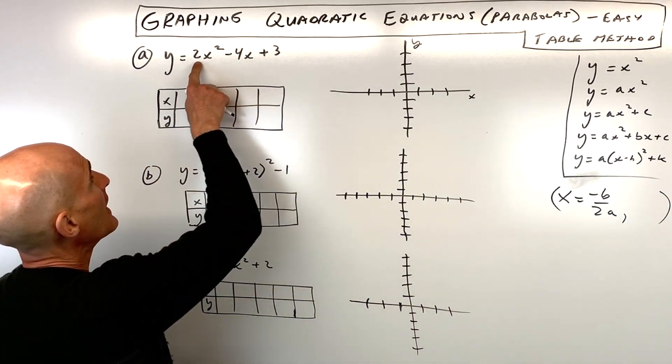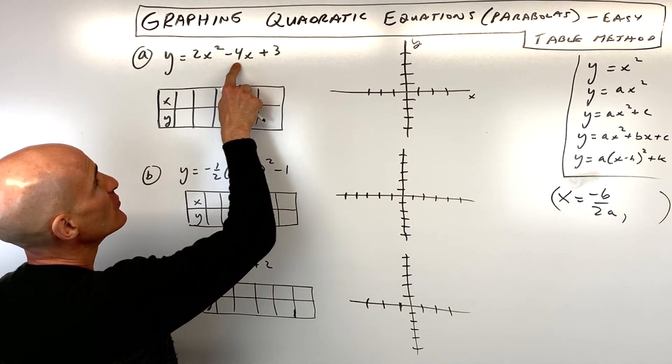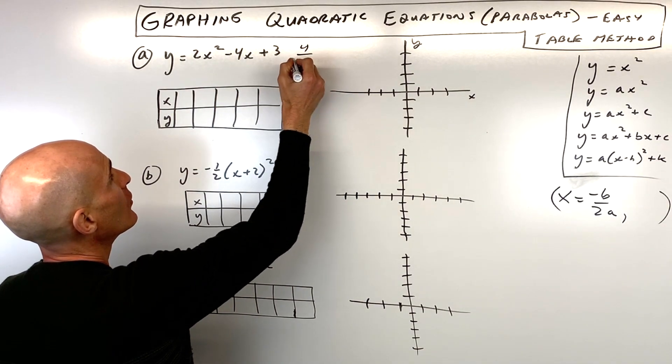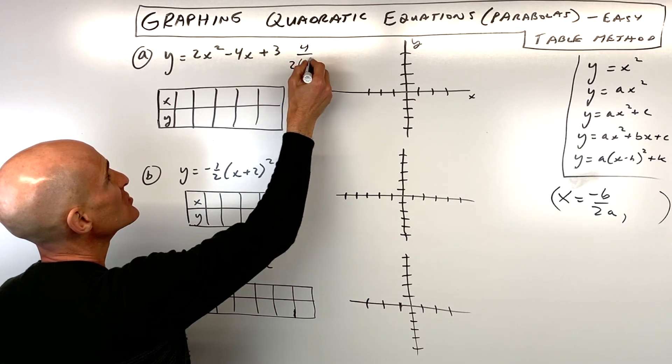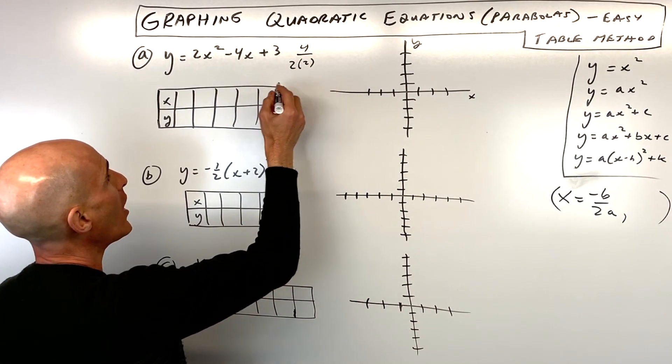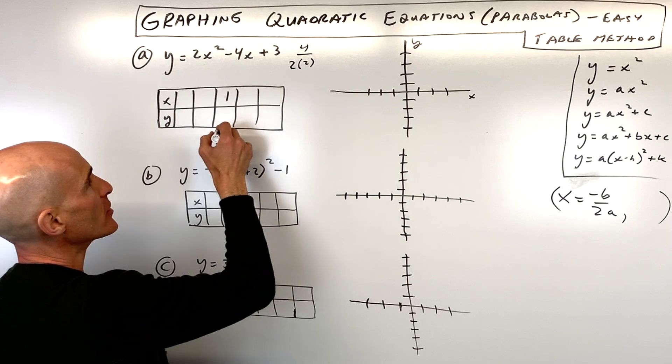So if we do a, b, and c, the opposite of b, negative b would be positive 4 over 2 times a, which is 2. 4 divided by 4 is 1. So what I'm going to do is I'm going to put this vertex in the middle here, so x, y.